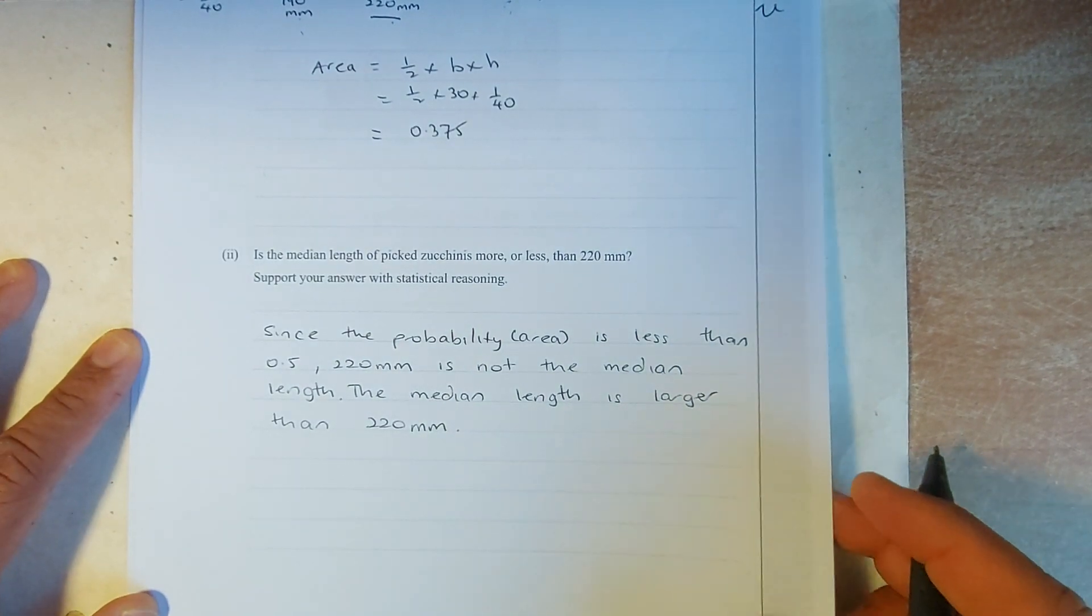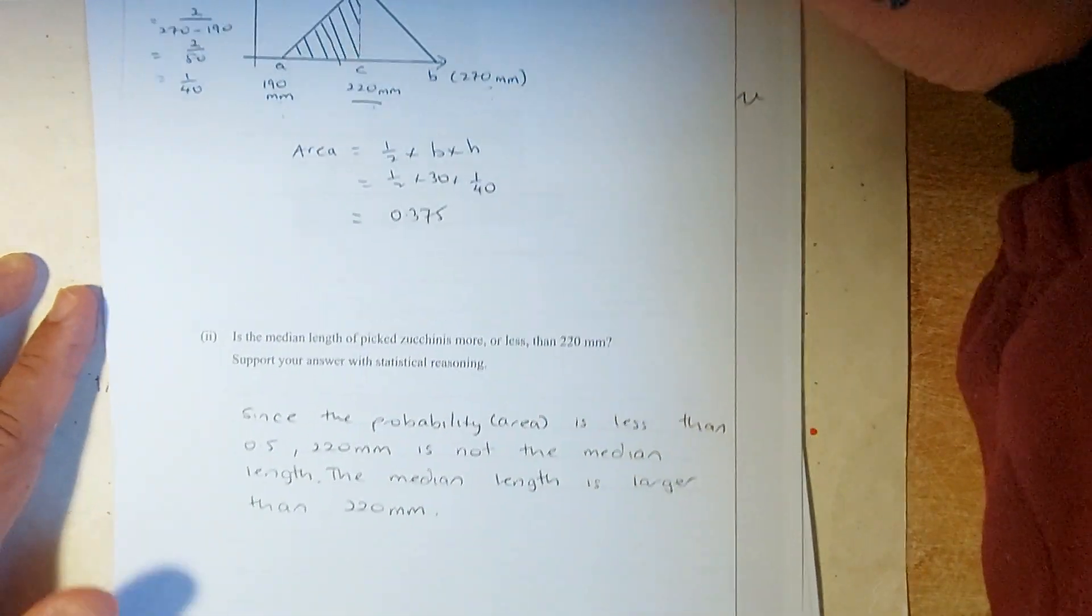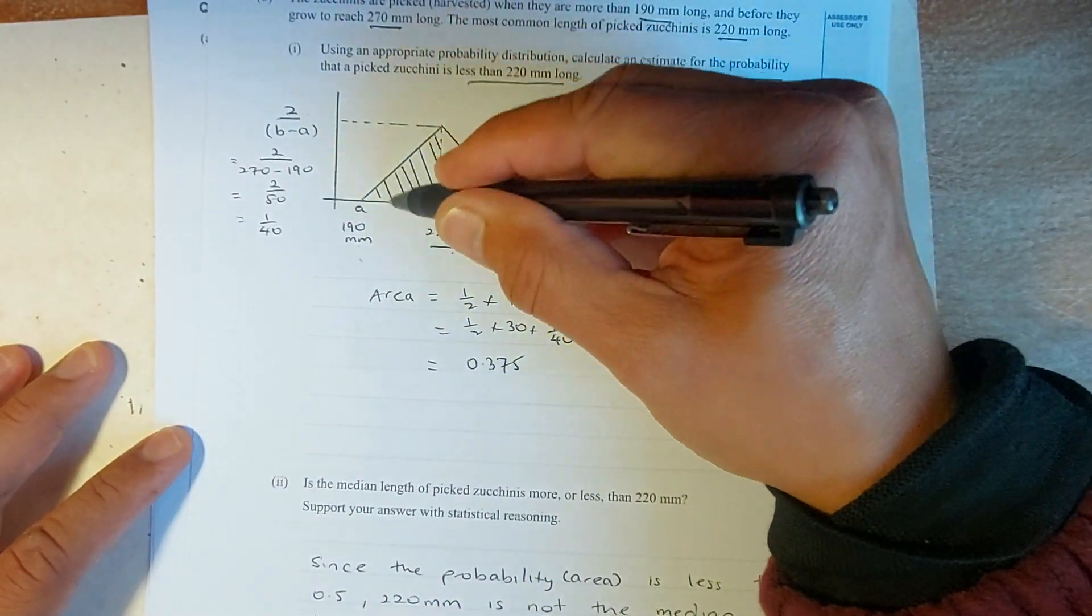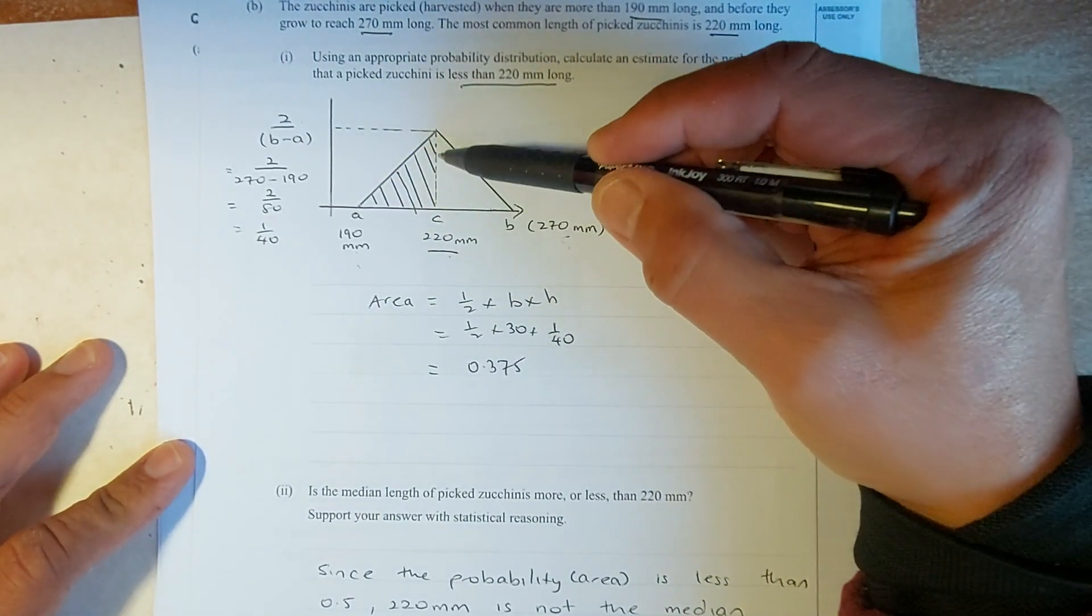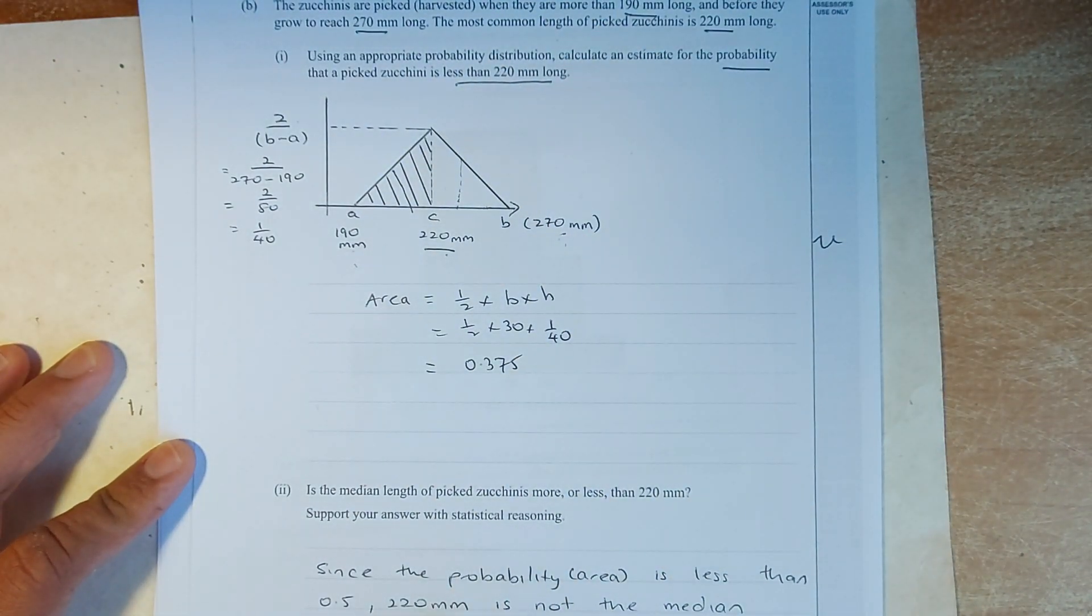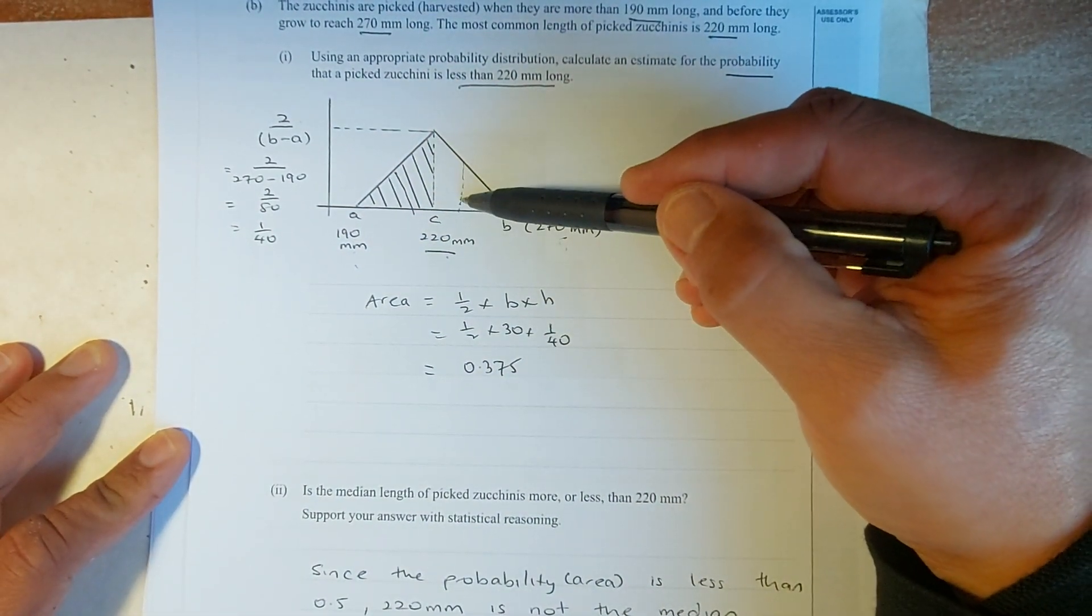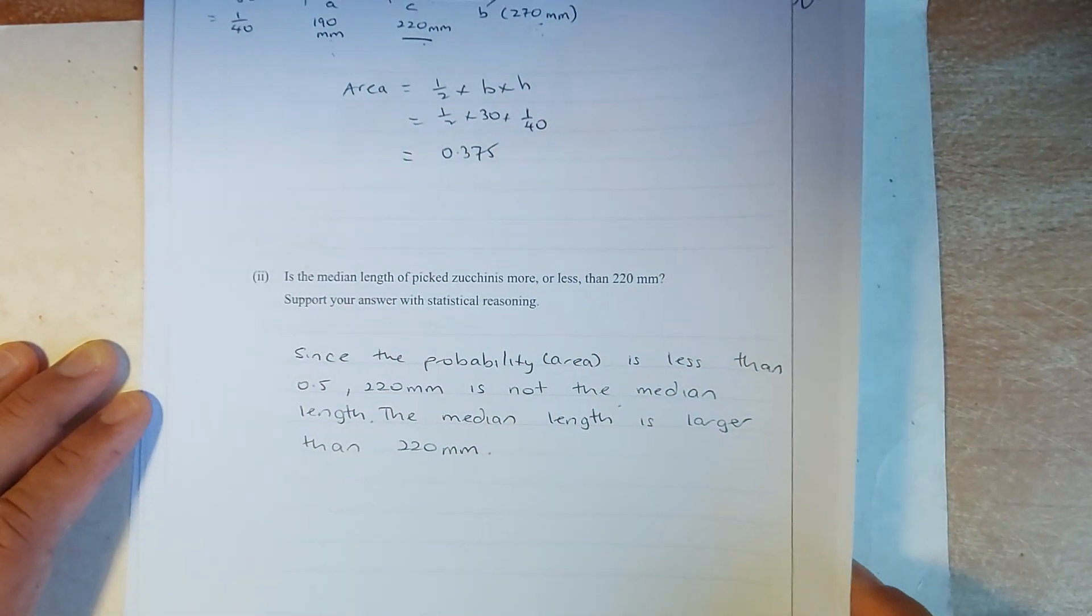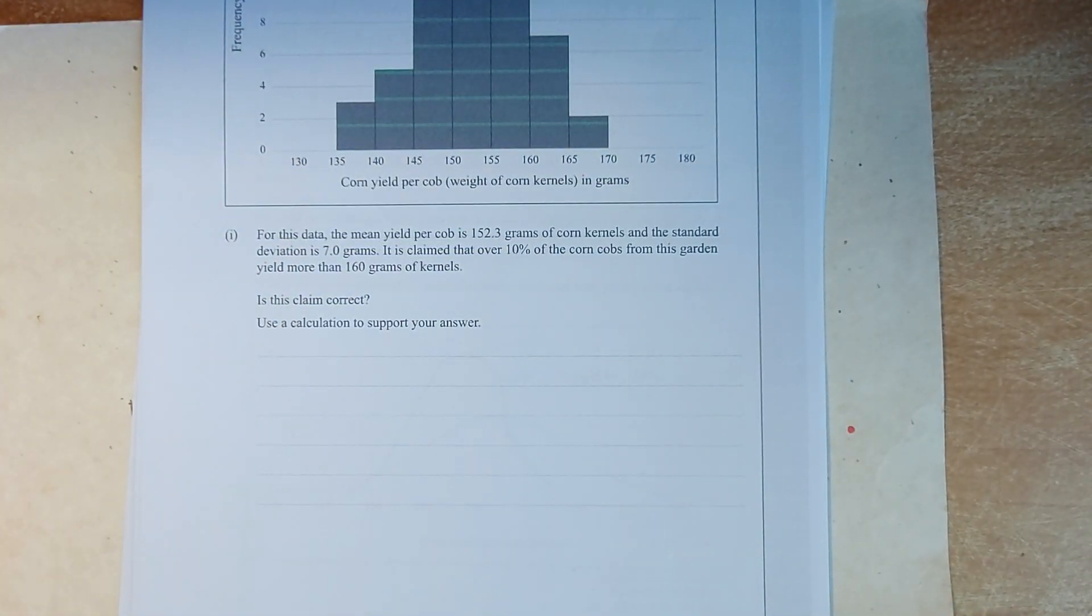So, if the question asks you is the median more or less than 220. So, we have found that 220 was this area here, the length here. So, if this area is 0.375, that's why the median has to be further down the length. That's why we can say that 220 is not the median. So, this is not the median. The median is more on the right. So, the median has to be larger than 220. And that's how you answer this question. If you can answer that, that is a merit.